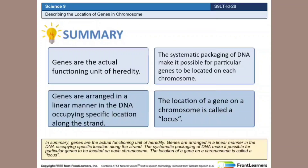In summary, genes are the actual functioning unit of heredity. Genes are arranged in a linear manner in the DNA, occupying a specific location along the strand. The systematic packaging of DNA makes it possible for particular genes to be located on each chromosome. The location of a gene on a chromosome is called a locus.